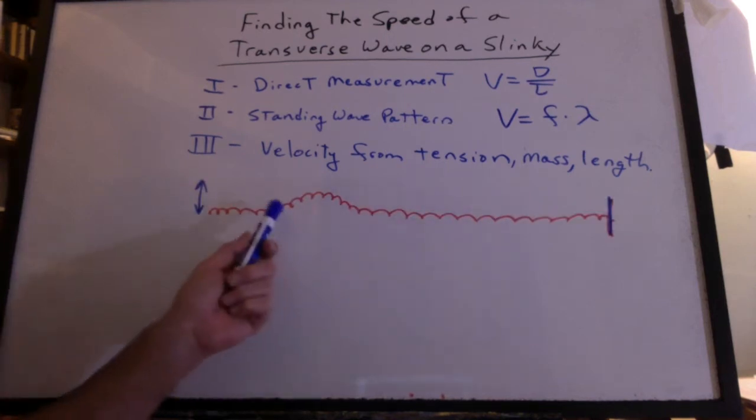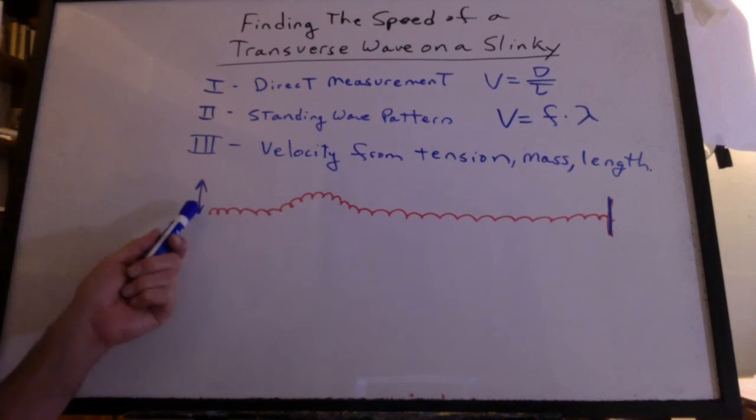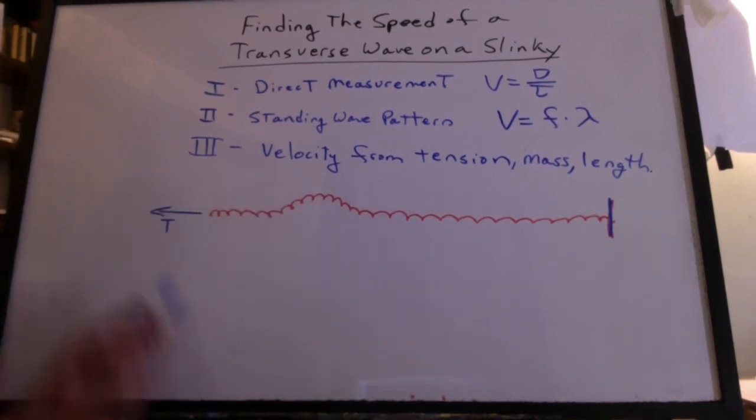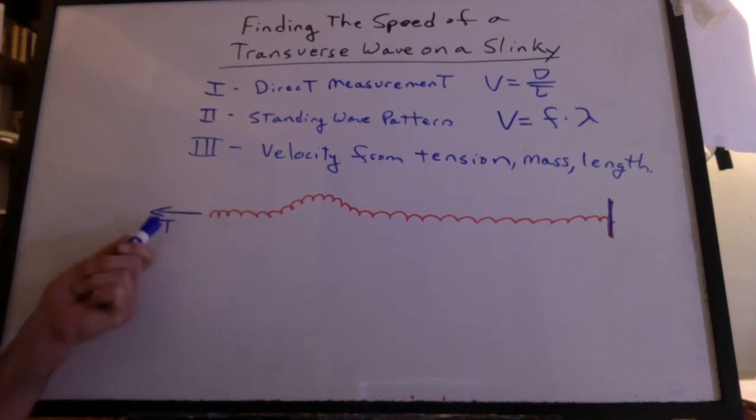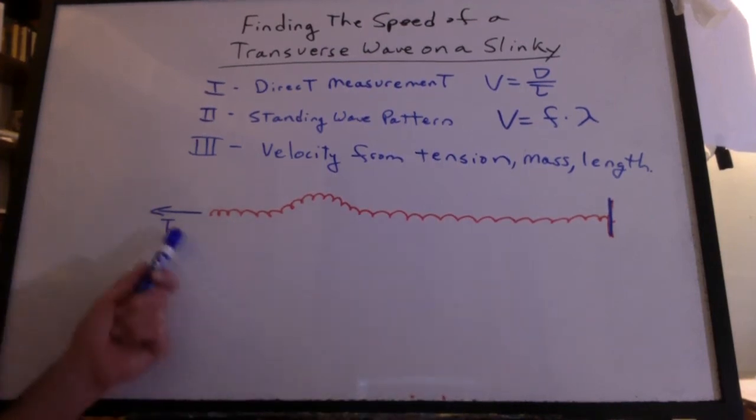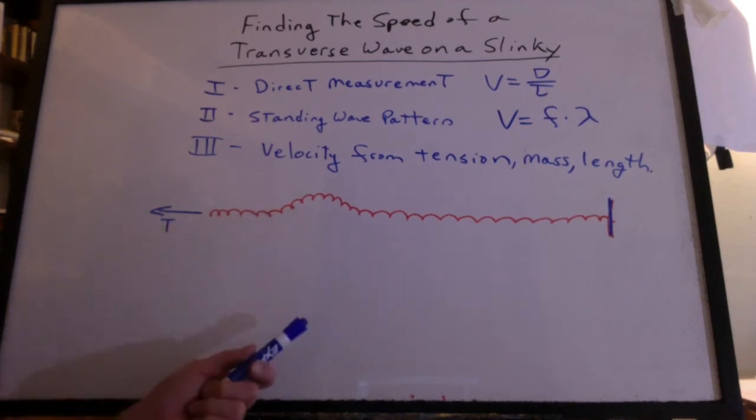Here I have the slinky and I shake my hand up and down real quick and send a pulse down the slinky. There has to be a tension force of me pulling this back or else the whole thing will just collapse. We learned earlier that the tension will affect the speed of the wave. How come?